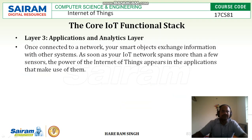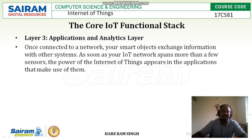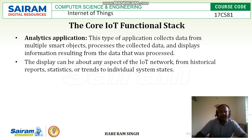Next is layer 3, called the Application and Analytics layer. Once connected to a network, a smart object exchanges information with other systems. Once the connection to the network is done, the smart object can share or exchange information with other systems. As the IoT network expands beyond a few sensors, the power of IoT appears in the applications that make use of them. An analytics application collects data from multiple smart objects, processes it, and displays resulting information.